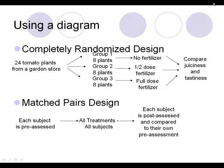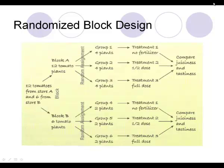For the matched pairs design, you pre-assess each subject, put all subjects under all treatments, then post-assess them to compare results. For the randomized block design using the tomato experiment: if 12 plants came from one store and 6 from another, you keep them separated into Block A and Block B. Within each block, plants are randomly assigned to treatment groups — four plants per treatment from the larger block, two per treatment from the smaller — then each block is compared for juiciness and tastiness.